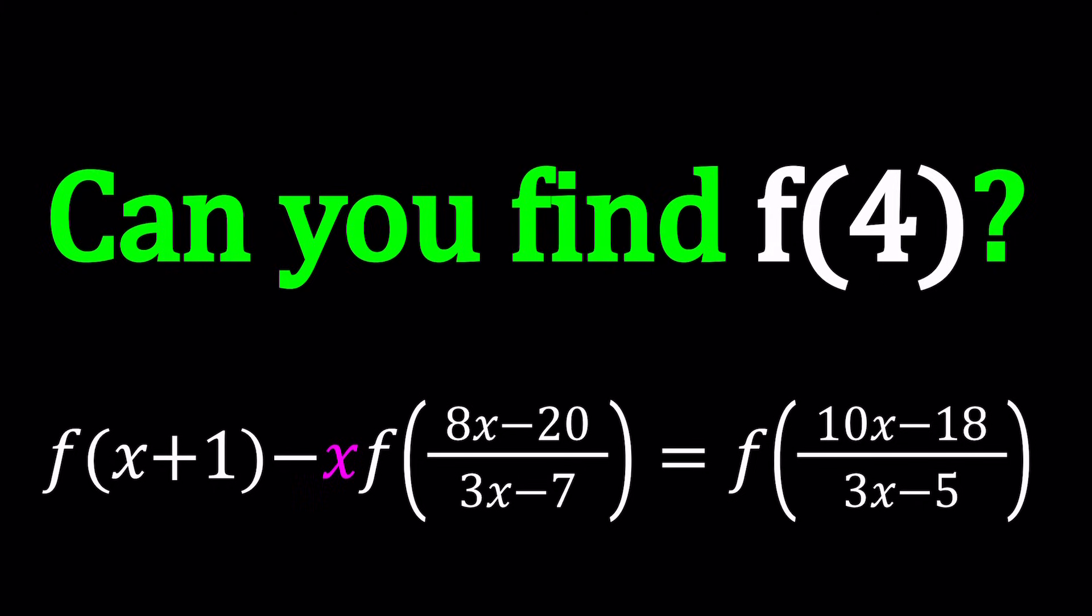So we have a function f that is given by this equation: f(x+1) minus x times f of the quantity (8x-20)/(3x-7) equals f of the quantity (10x-18)/(3x-5). Our goal is to find f(4), even though it wasn't mentioned in the title, that's what we're looking for.